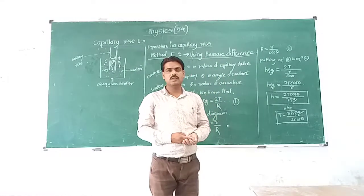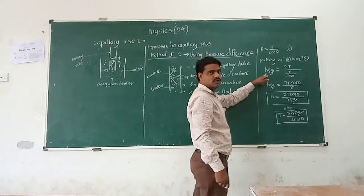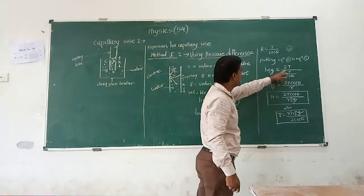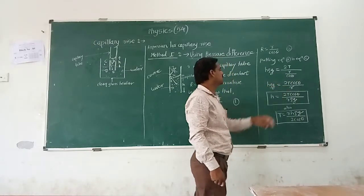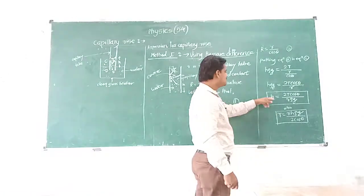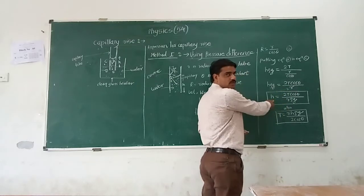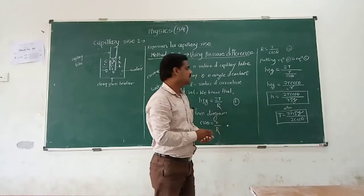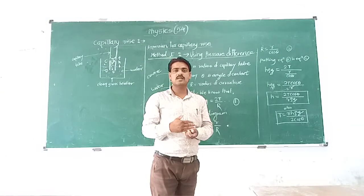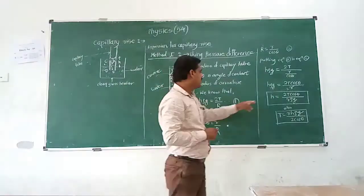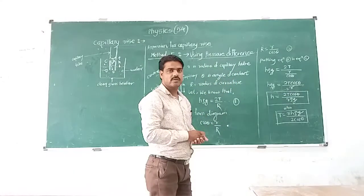Putting equation 2 into equation 1, we get H·ρ·g = 2T / (r/cos θ). Solving this, H·ρ·g = 2T·cos θ / r, and therefore H = 2T·cos θ / (r·ρ·g). This is the height of capillary rise above the surface of water. This is a very important formula.